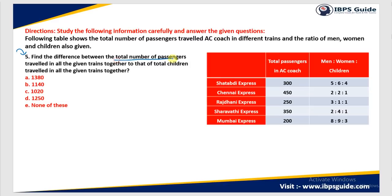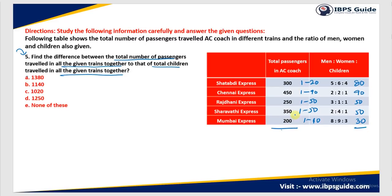Question 5: Find the difference between the total number of passengers traveled in all the given trains together and the children traveled in all the trains together. Children: Satabdi (1 part=20, 4 parts)=80; Chennai=90; Rajdhani=50; Saravati=50; Mumbai=30. To find the difference efficiently: cancel matching values — 50+50=100 cancels from the total; 80+30=110, plus 90=200 also cancels. Adding the remaining passengers: 450+250 = 700, plus 300=1000, plus 200=1200, plus 50=1250. So the answer is 1250, that is Option D.